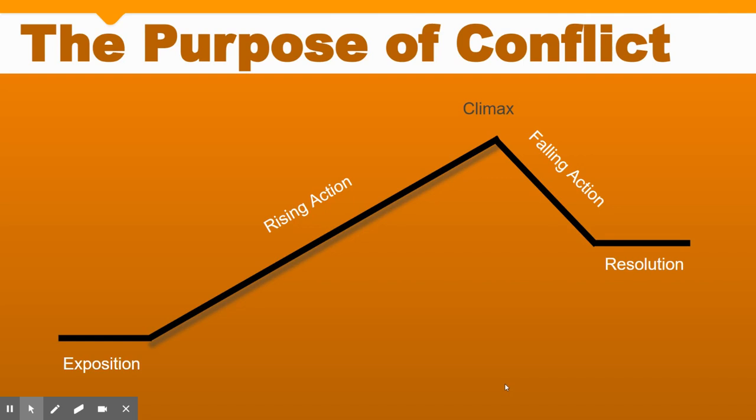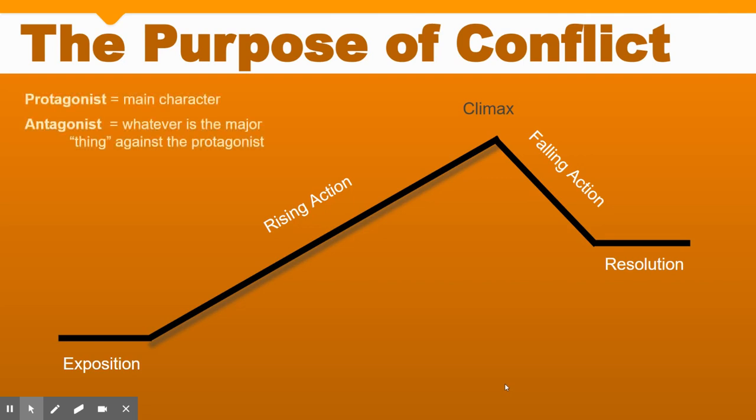Before we dig into the purpose of conflict, let's review a few key terms. First is protagonist — the fancy word for the main character of the story. Antagonist is whatever is the major thing going against the protagonist, and that could be a broad range of things. We'll talk about them more specifically as we get into the different types of conflict.